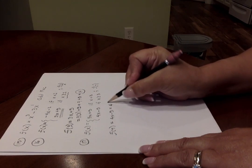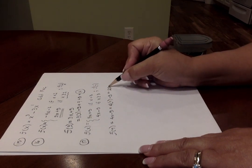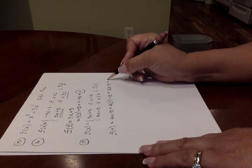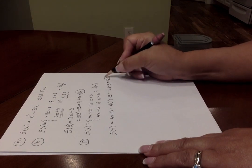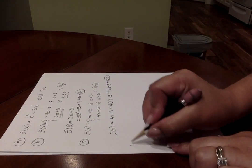So you're going to plug in 7 using the bottom piece of the function. So it's 4 times 7 minus 5, which would be 28 minus 5, which would be 23. That's your answer for that.